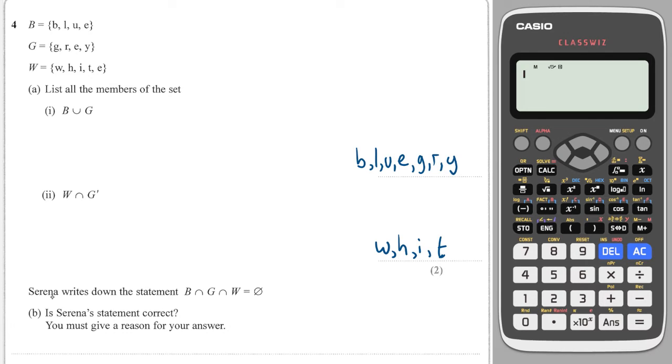Okay, Siena writes down the statement that the intersection between B, G and W is empty. Is that correct? Well, are there any letters which are in B, G and W? And the answer is yes, there is. E is in all three. So the statement is wrong. And that's because E exists in B and G and W.